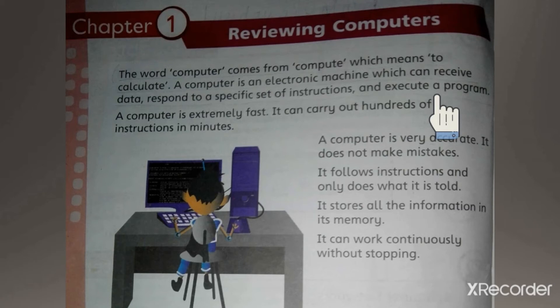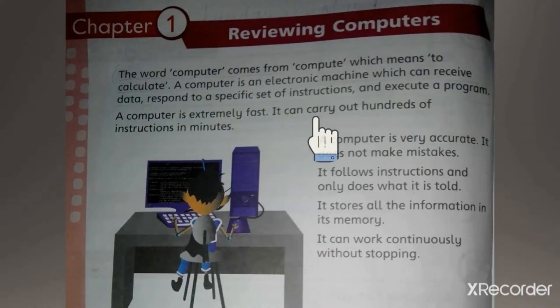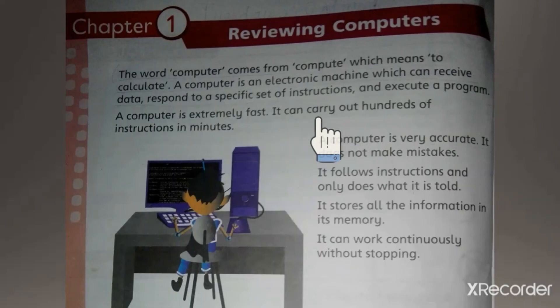A computer is extremely fast — extremely fast means its processing speed is very fast. It can carry out hundreds of instructions in one minute. So computer ek minute mein hundreds of instructions carry out — yaani complete — kar sakta hai.